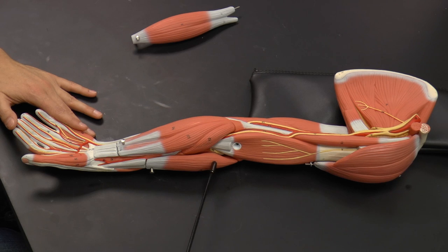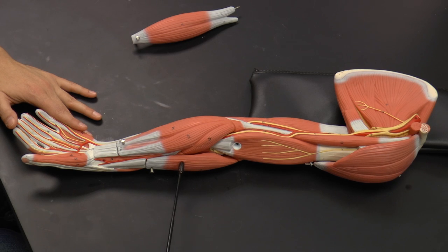Here you have a muscle that forms the lateral part of the arm, and this is called the brachioradialis muscle. Remember, brachio refers to the humerus up here, the brachium, and then radialis because it attaches towards the thumb side.